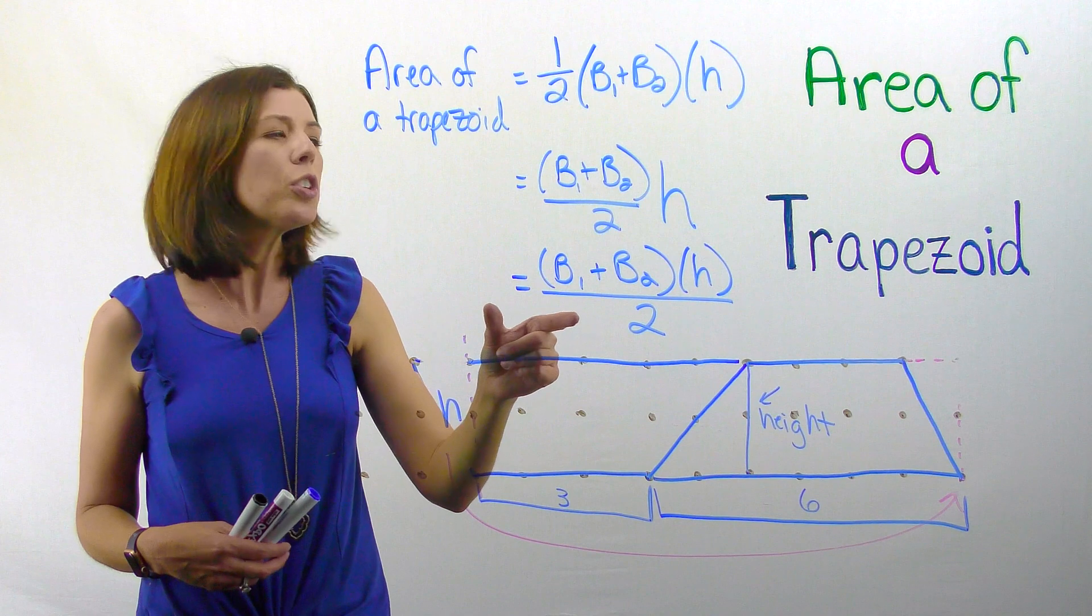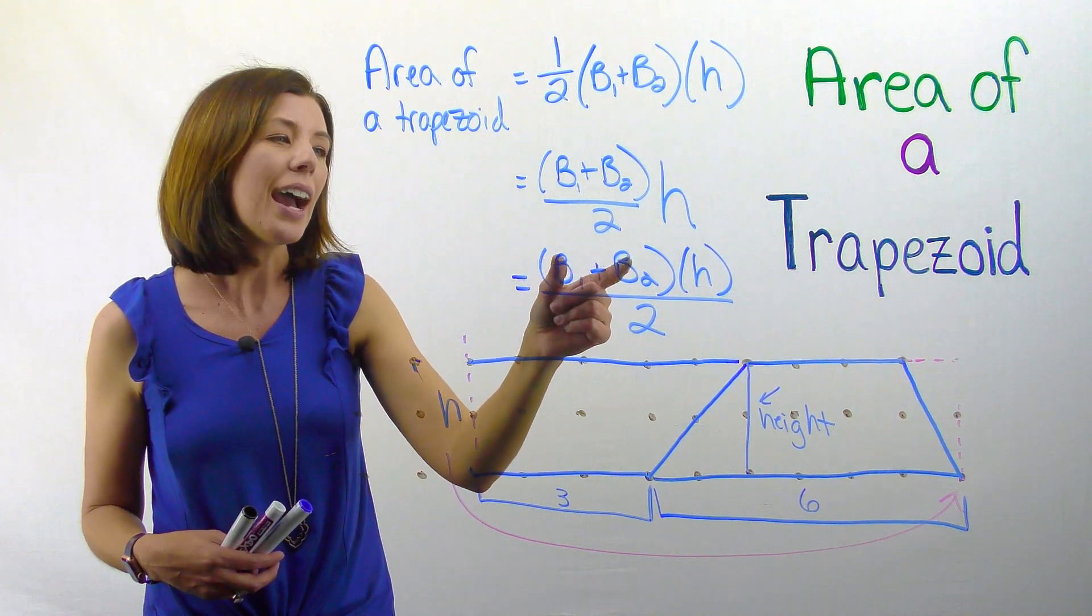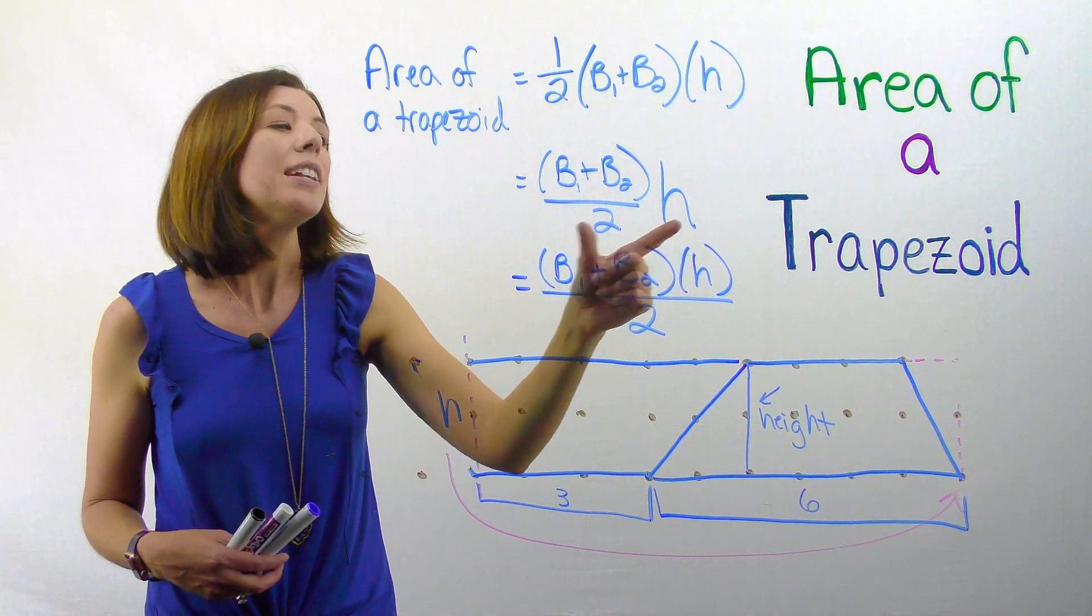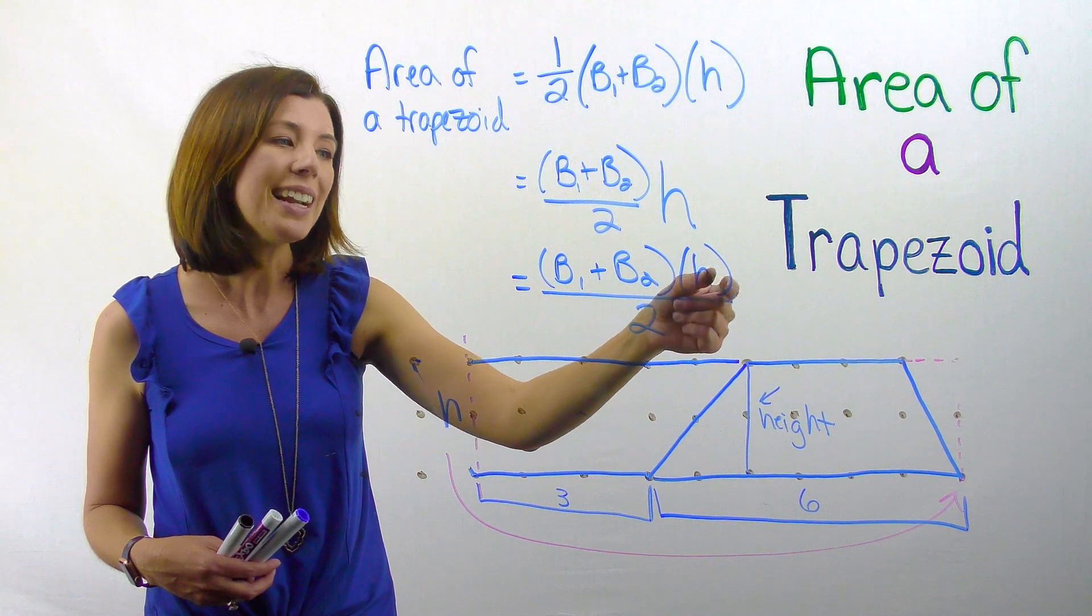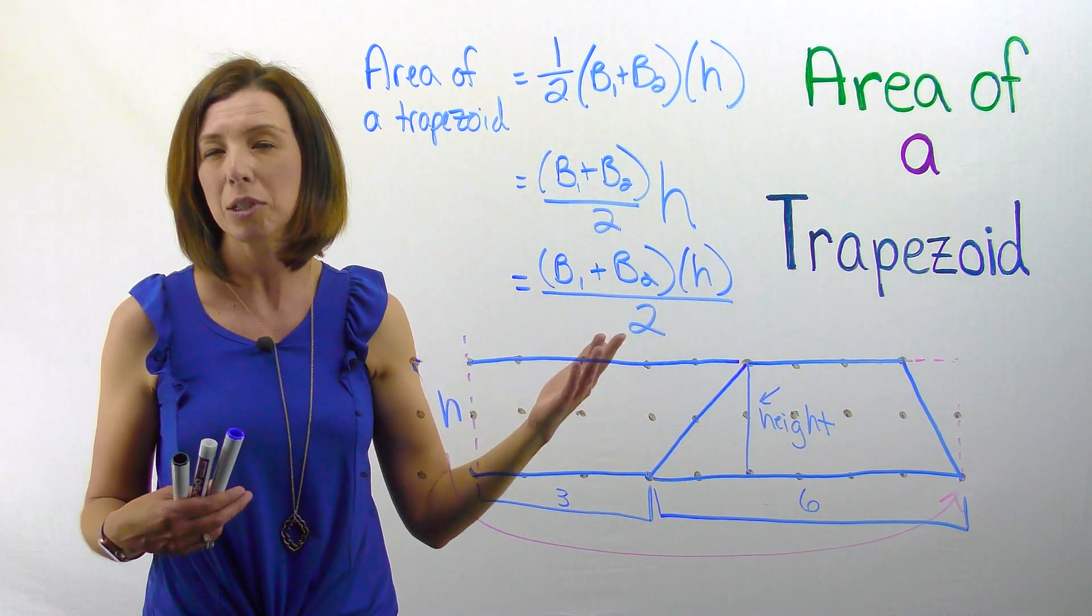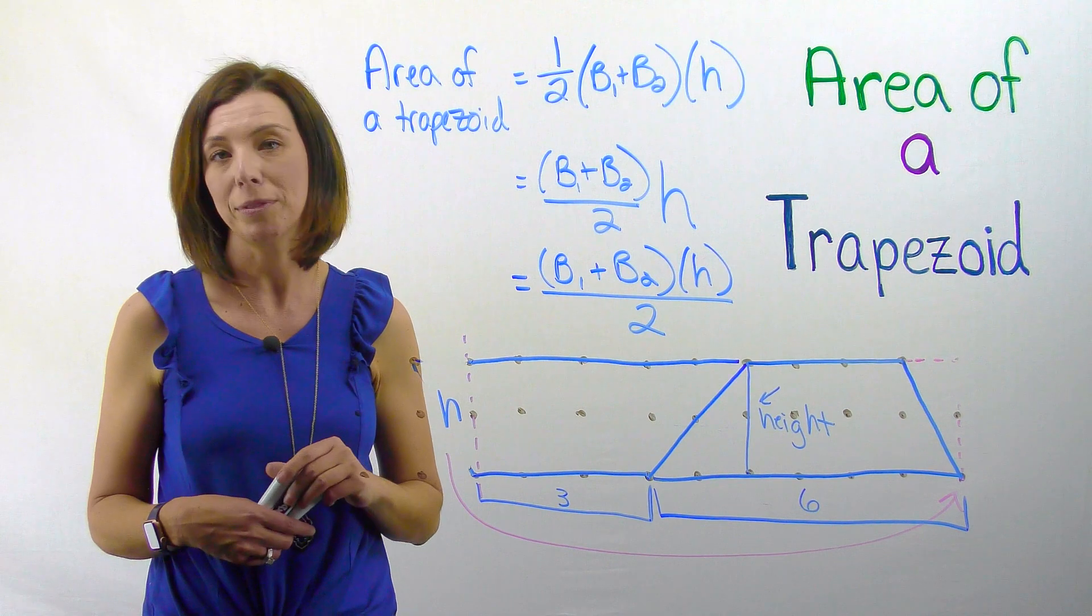So notice that I could do adding the bases first and divide by two because dividing by two is the same as multiplying by one half, then multiply times the height, mathematically equivalent. I could also take and add the bases together, take that quantity, multiply times the height, again divide by two, which is the same as multiplying times one half. This is also mathematically equivalent.